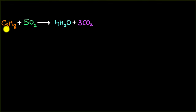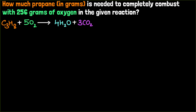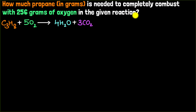Let's solve a cool stoichiometry problem. Consider the chemical reaction where propane burns with oxygen, giving us water and carbon dioxide. Our question is: how much propane in grams is needed to completely combust with 256 grams of oxygen in this reaction?